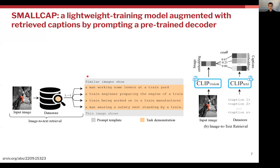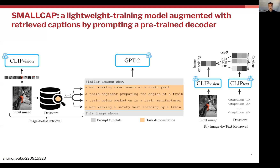The prompt always starts with "similar images show," followed by the four retrieved captions from the data store, and then the static phrase "this image shows." This will be the prompt for the GPT-2 model to tell us what the current image contains. However, we also want to harness the information still encoded in the image. So using the embedding from the CLIP vision model and the text prompt passed into GPT-2, we have a cross-attention layer, where every embedding layer in the GPT-2 model attends to the last hidden state of the CLIP vision model.